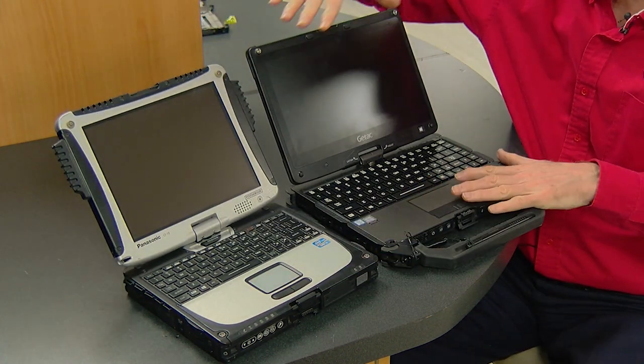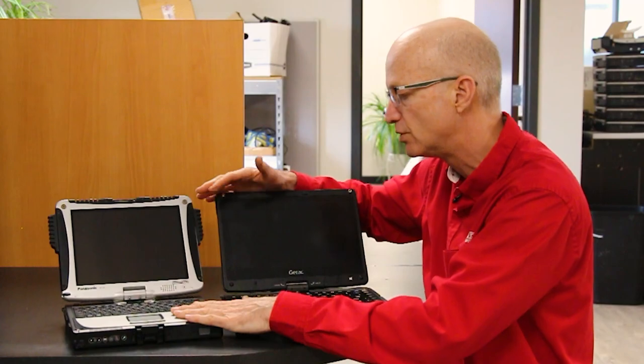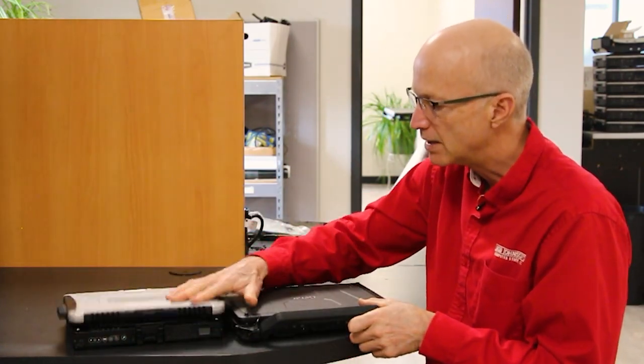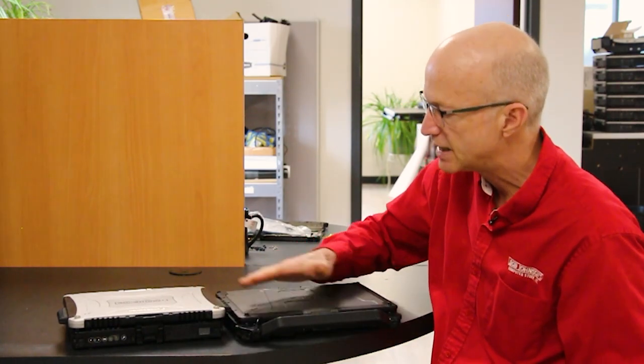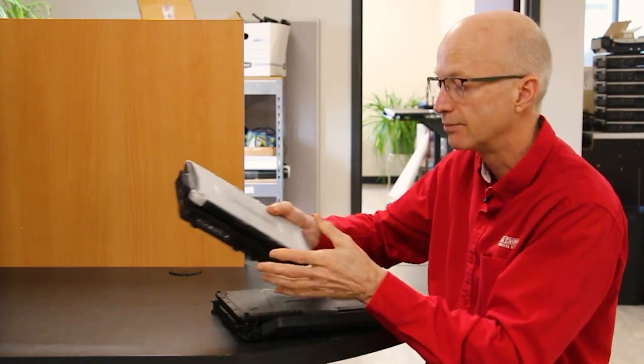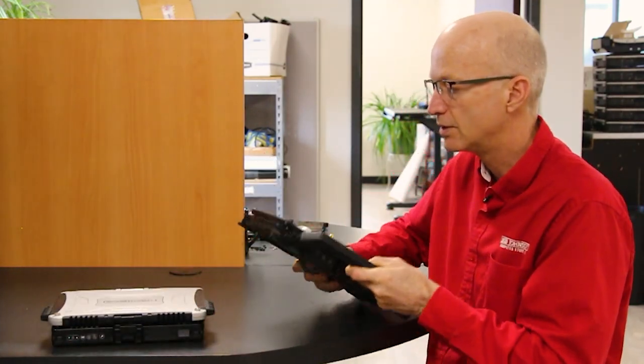Those are the most obvious differences between these two. The other more subtle ones are how thick it is. If we look at the CF-19, it's about a half an inch thicker than the G-TAC. But the Panasonic's going to be slightly lighter than the G-TAC.